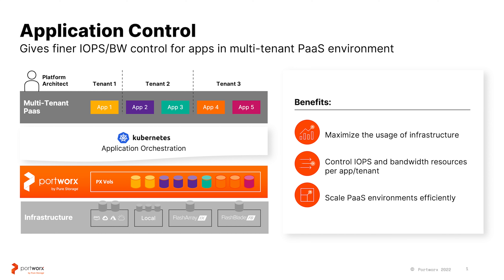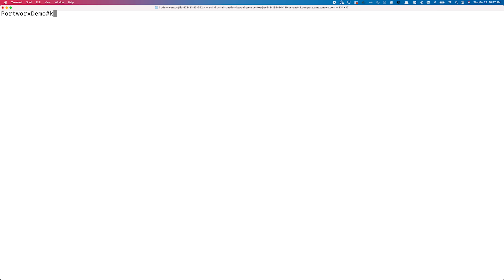IOPS or bandwidth resources per application or tenant. It allows them to maximize usage of the underlying Kubernetes cluster and infrastructure, and to scale their environments more efficiently by declaring these upper limits for individual applications. So let's see all of this in action — here we have an EKS cluster which is already running